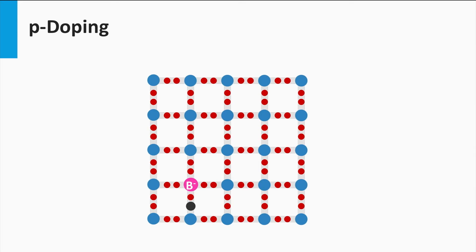Secondly, we are going to intentionally put boron impurities in the silicon network. Since the boron atom has only three valence electrons, it is missing one electron to make a molecular bond with its four neighboring silicon atoms. As a consequence, one molecular bond is filled with only one electron.